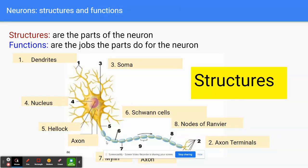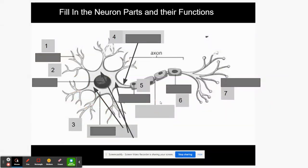All right students, today's lesson we are going to focus on the neuron — specifically taking notes about the structures, which are the parts of the neuron, and the functions, which are the jobs that those parts do. Here's a diagram of all the parts. The structures are the parts of the neuron and we're going to go through each part and talk about what they do.